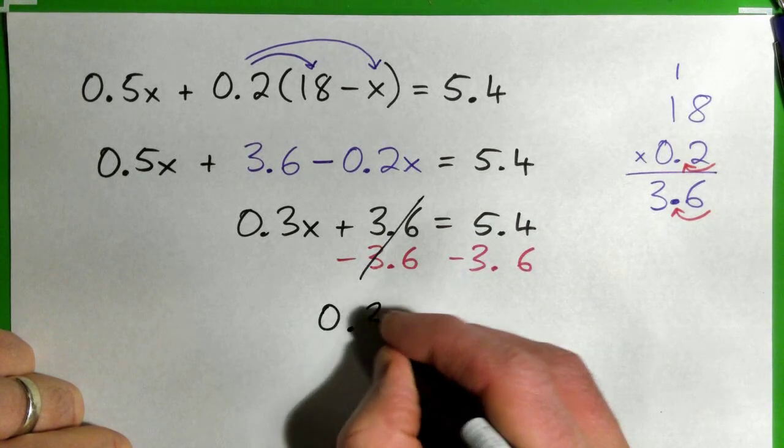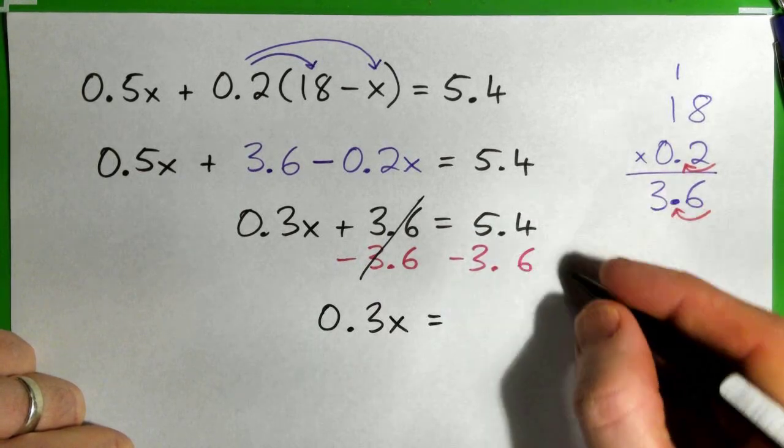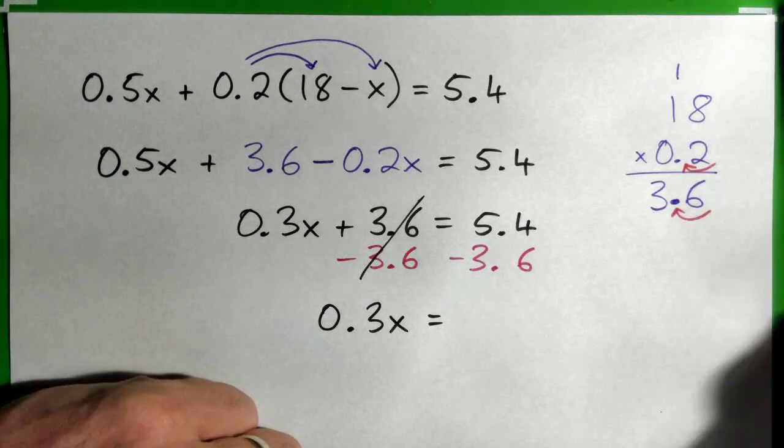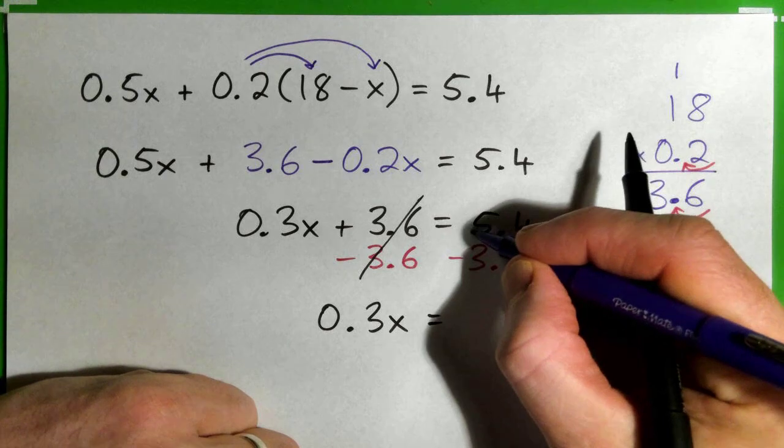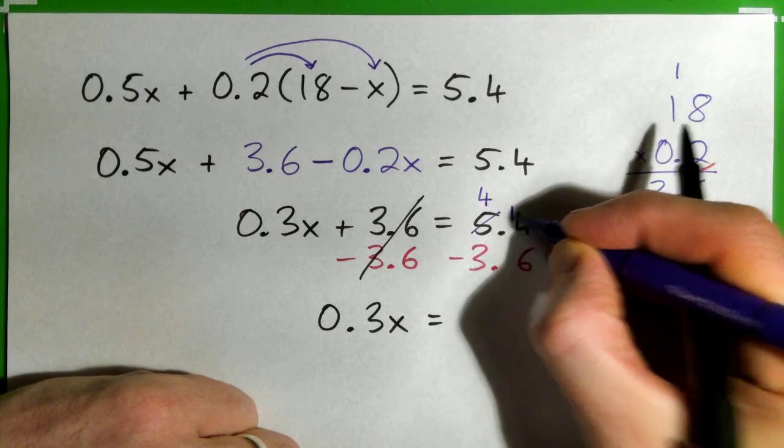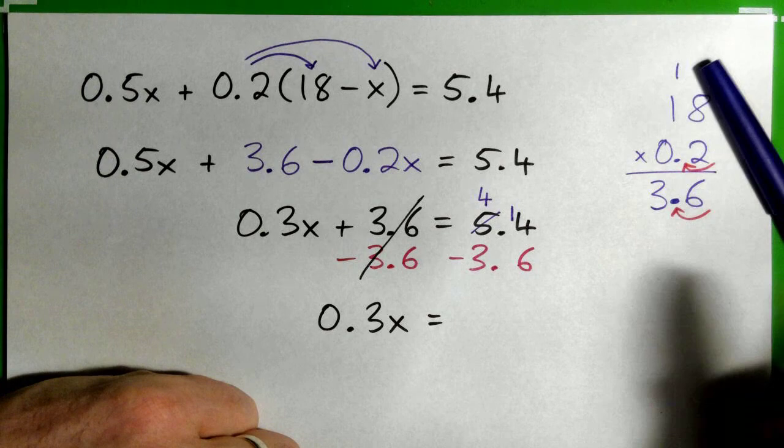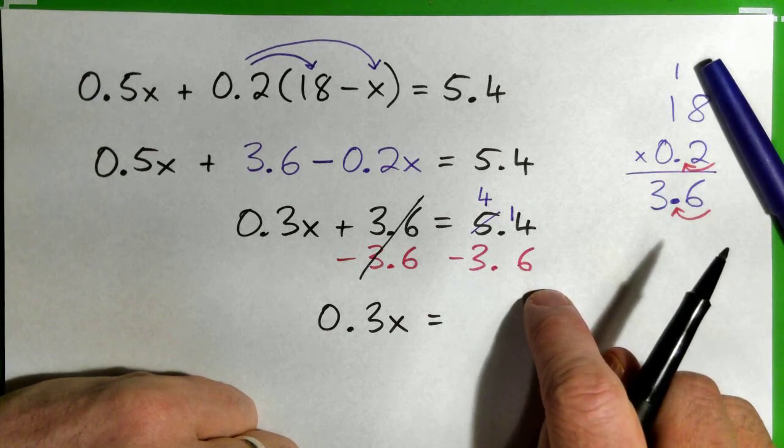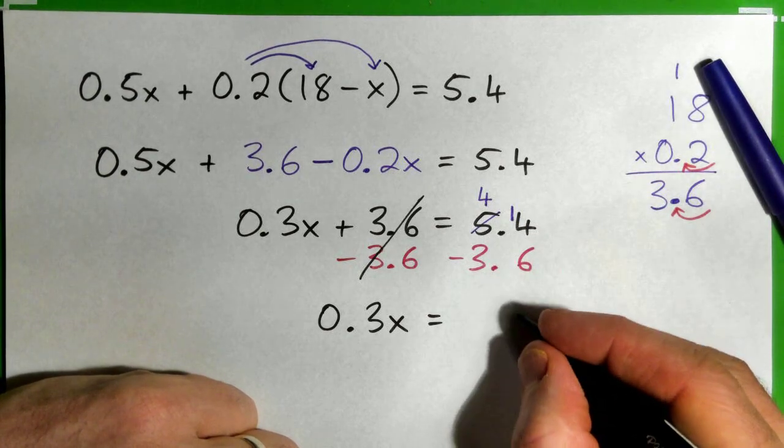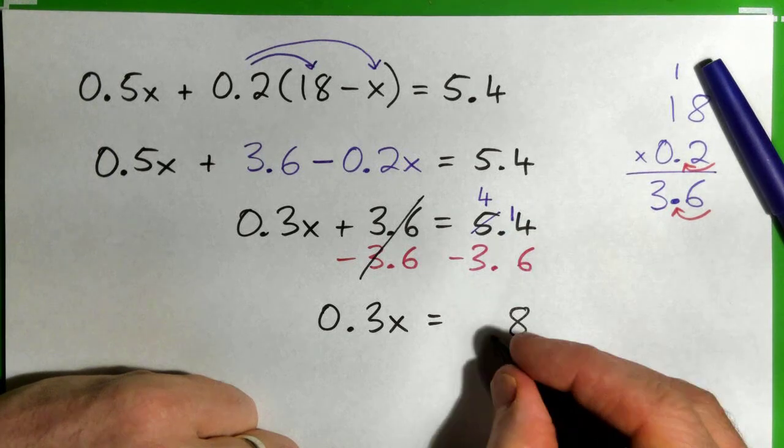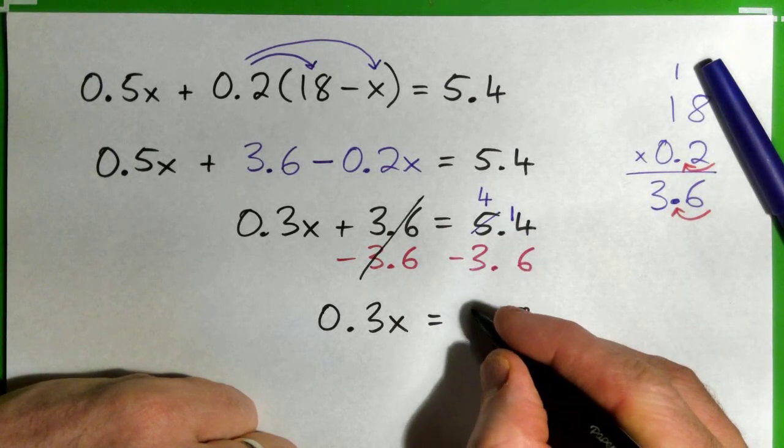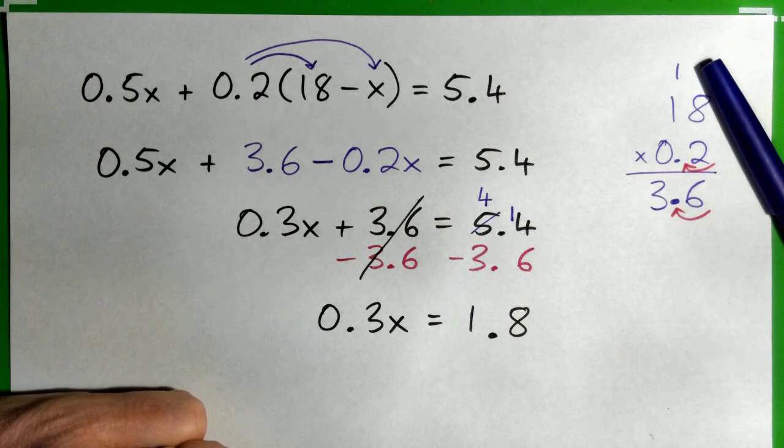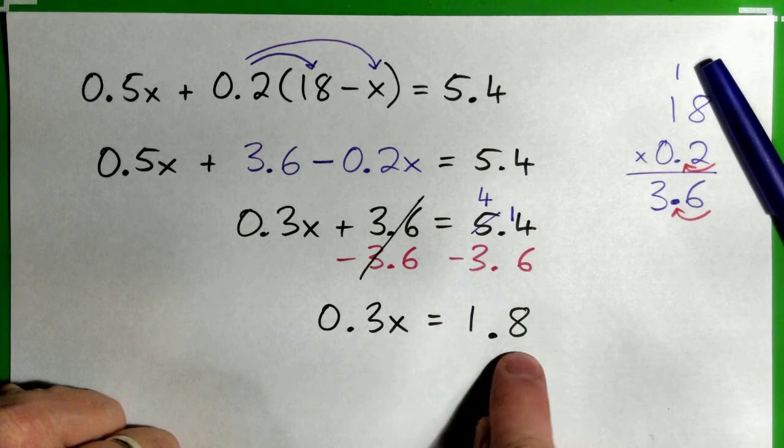Now on the right, 4 minus 6 won't work. We've got to borrow from the 5. That becomes a 4. This becomes 14. Now 14 minus 6, 8. Good. Put down your decimal point because we're subtracting. 4 minus 3, 1. So now we have 0.3 times x equals 1.8.